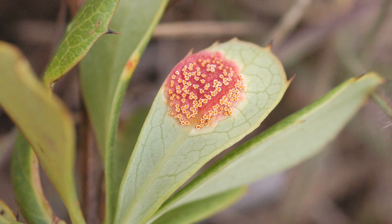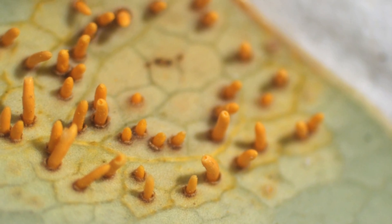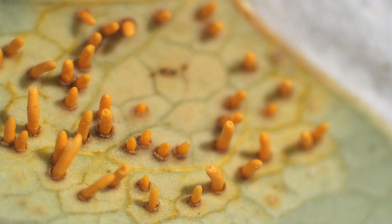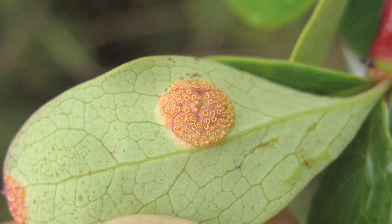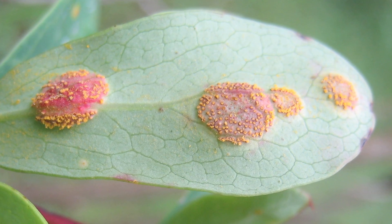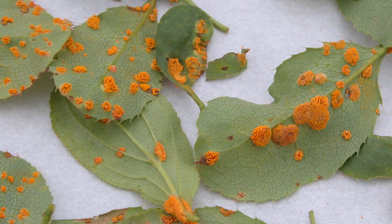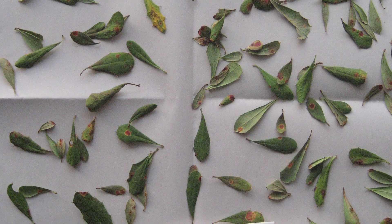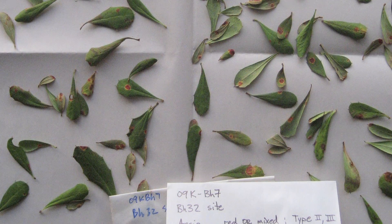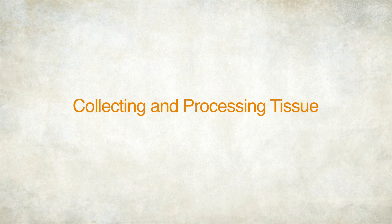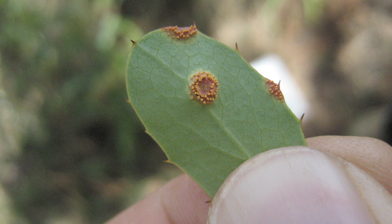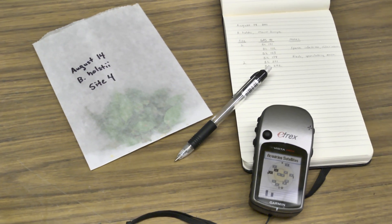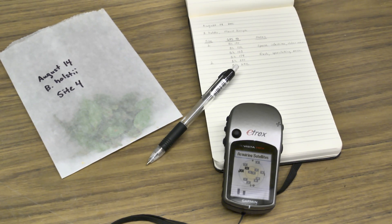A single aecial pustule contains many individual aecial horns, which for the cereal rusts are long and trumpet-like in shape. When young, the aecial horns can be a vibrant orange or yellow-orange color. Thousands of aeciospores are formed within these structures, and these spores in mass appear as an orange-yellow powder. Both the aecial structures and the spores are of interest for collections. When collecting, look for plant tissue with active, sporulating aecia, and be sure to record the location and barberry species for each collection site. This information will remain with the collection as passport data into the future.